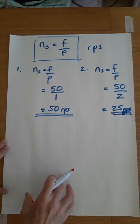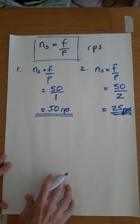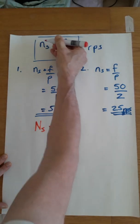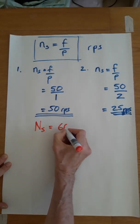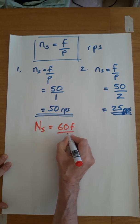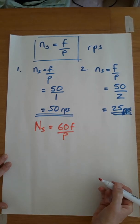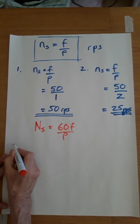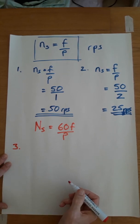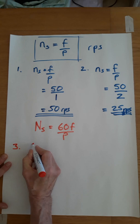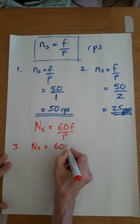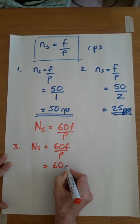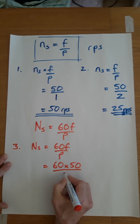Let's look at rpm. The formula has moved from lower case to upper case and it's 60f over p. The reason for the 60 is quite simple — there are 60 seconds in a minute and we're now doing revs per minute. Example three: we have a two pole machine on 50 hertz and ns equals 60f over p — 60 times the frequency over the pairs of poles.